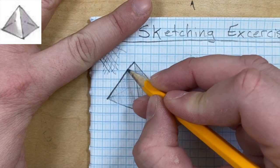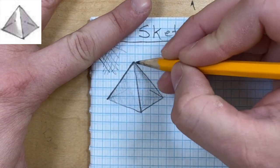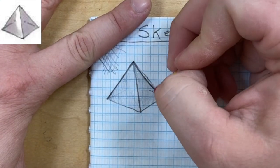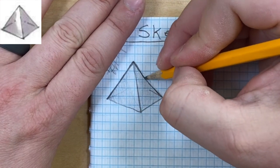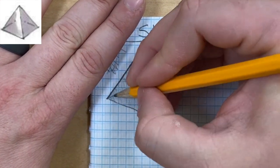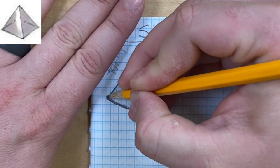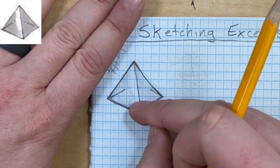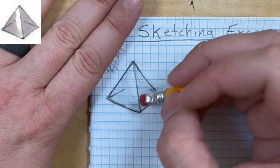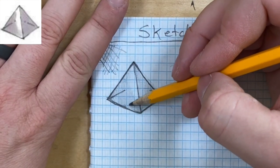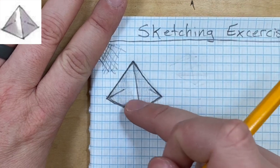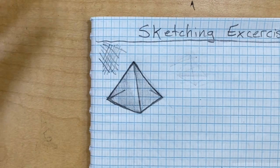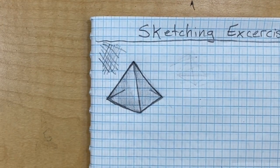And then you might want to come over with an eraser and erase those edges. And then I'm going to darken in the edges of the actual pyramid. Now you've got your pyramid. The next one I'm going to do, I'm going to do the very last one, it's a cylinder.